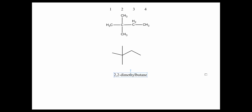This molecule has four carbons in the longest chain — counted as one, two, three, four. The two methyl groups at the top and bottom of the drawing are the two branches, and they're both bonded to carbon number two. Therefore, we name this 2,2-dimethylbutane: butane because there are four carbons in the longest chain, and the two methyl branches are both located on carbon two, so we use the prefix 'di'.